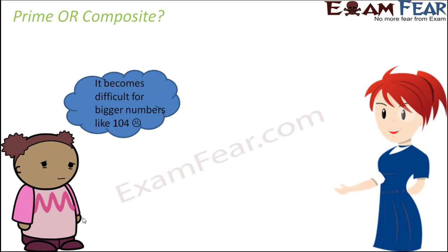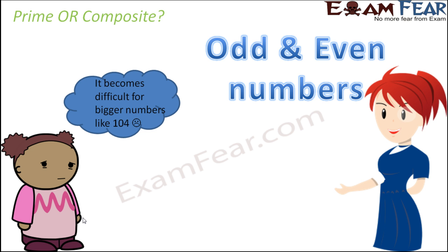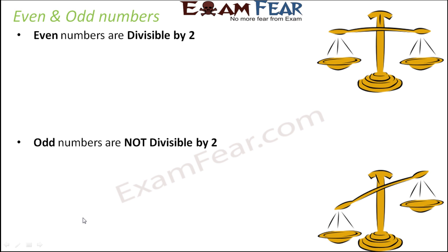So what do we do? In order to solve this issue, in order to find out quickly whether a particular number is divisible by another number or not, we introduce the concept of odd and even numbers. Even numbers are those numbers which are divisible by 2, and odd numbers are those which are not divisible by 2.